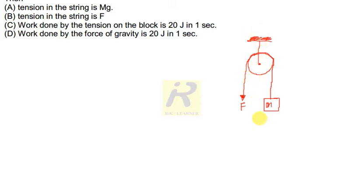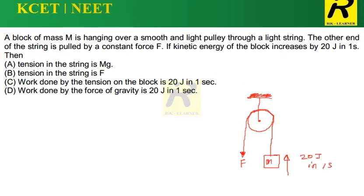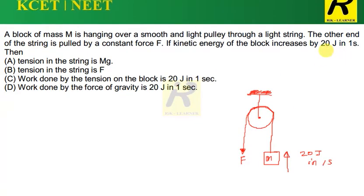It is said that the mass we are seeing here has gained a kinetic energy of 20 Joules in one second. So this is what they are saying in the question — 20 Joules in one second is the kinetic energy acquired by this block of mass M in one second.